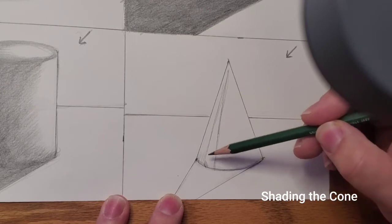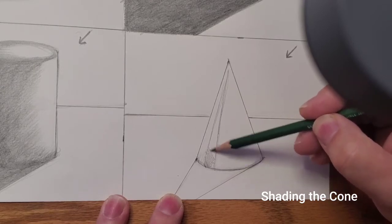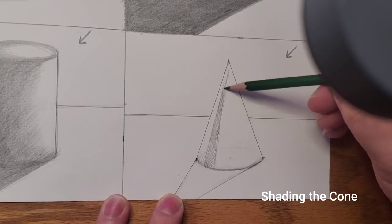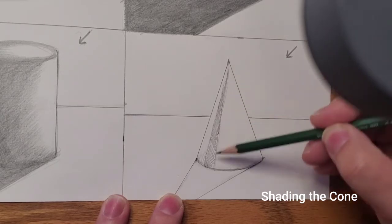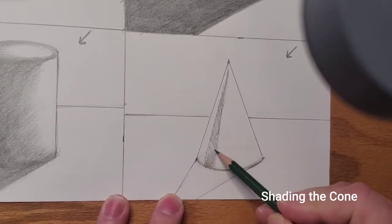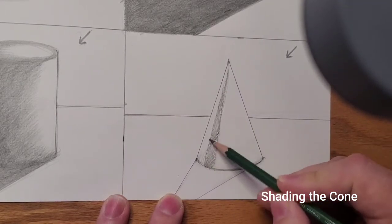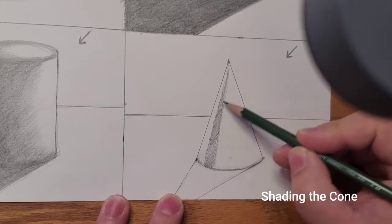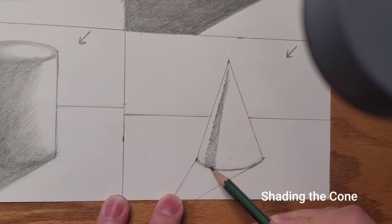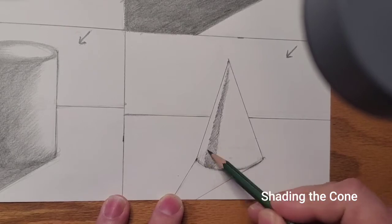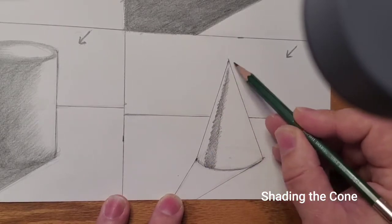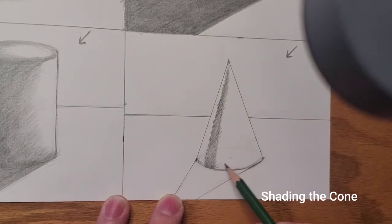Start out the same way. Hold your pencil back a little bit and lightly move your hatch lines up towards the top. Crosshatch goes in the other direction, and then slowly move towards the light source.